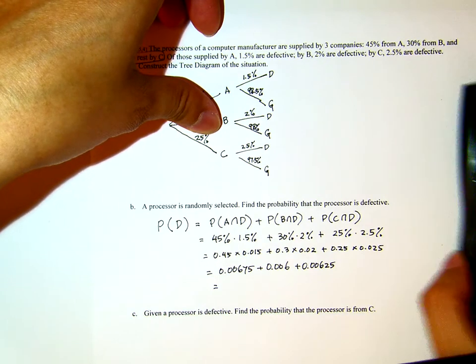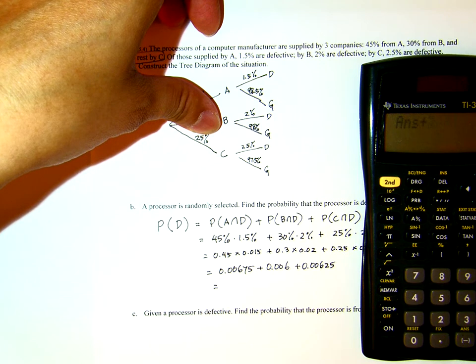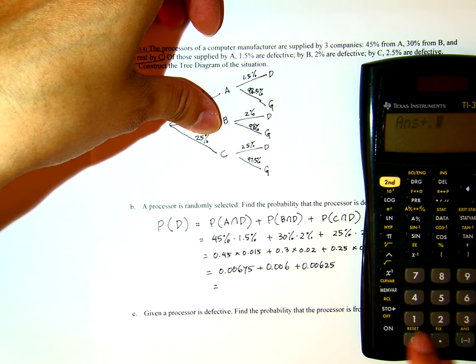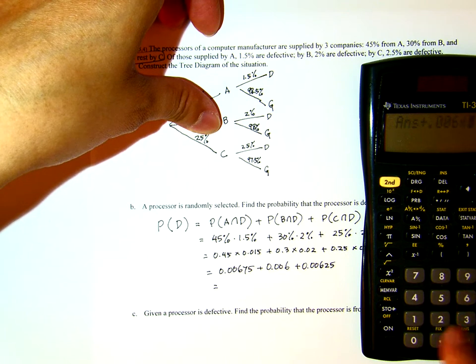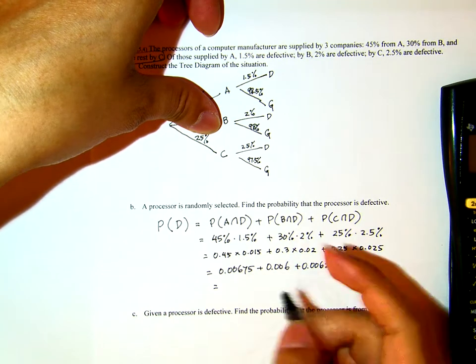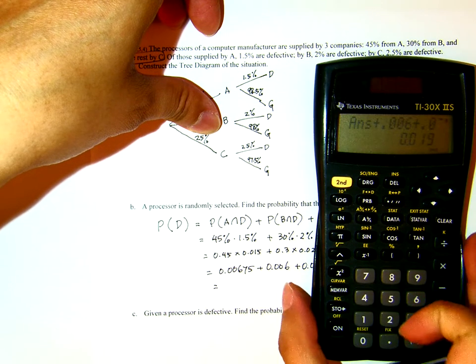And then when I add all of them, this 0.00675, plus 0.006, plus 0.00625, I get 0.019.